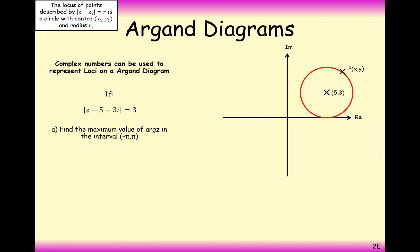Previously we looked at three different types of loci diagrams on an Argand diagram: a circle, a perpendicular bisector, and a half line to do with arguments. In this case we have a problem solving question. We were first asked to sketch |z - 5 - 3i| = 3. This tells us we want a locus of points that has a distance of 3 from the coordinate (5, 3) as the centre. Treat the minus 5 minus 3i effectively as a complex transformation — that's how we know where the centre is.